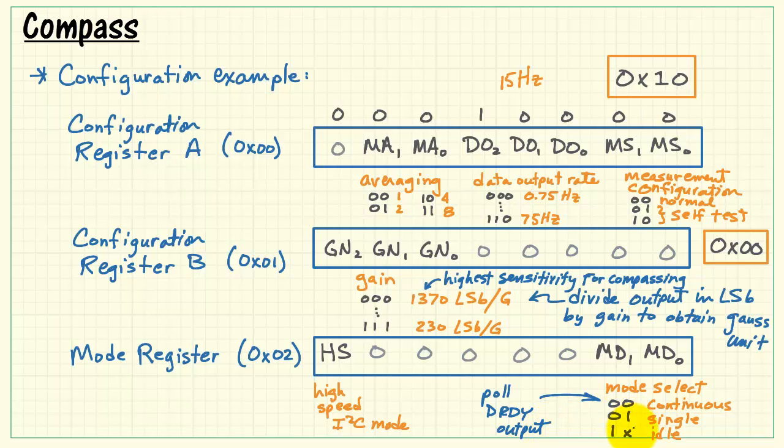If you're using continuous, you want to poll the data ready output. Single measurement mode means that you can get a single value out, but then the device returns back to an idle state. I'll go ahead and use the continuous mode and also leave the high speed I2C mode disabled, and so I have this value of 0 that I write to address 2.